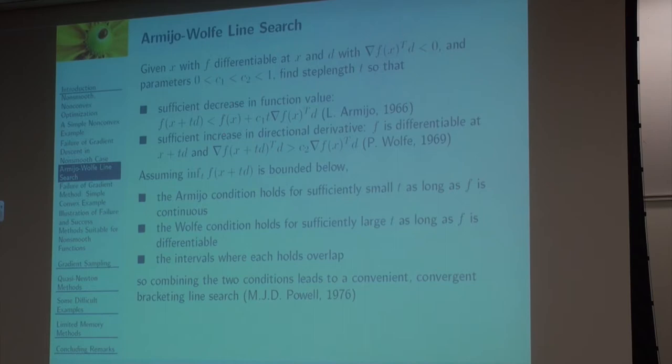Given X with F the branch full of X and V, which is a descent direction, which means that inner product is zero. And those parameters, C1 is the Armijo parameter, C2 is the Wolfe parameter. The Armijo condition, which goes back to 1966, says you want to get a sufficient reduction in F, in that sense.